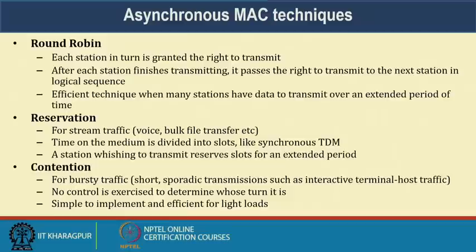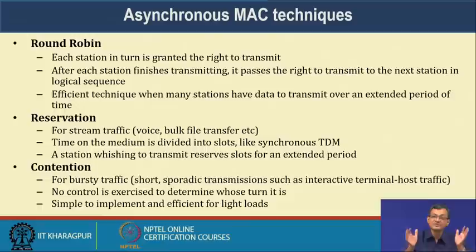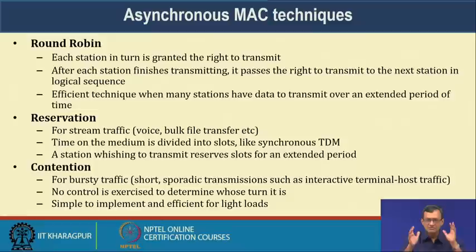In round robin for asynchronous MAC, each station is in turn granted the right to transmit. After finishing transmission, it passes the right to the next station in the logical sequence. This technique is efficient when many stations have data to transmit over an extended period. However, if some stations have nothing to transmit, they still get a turn — wasting capacity. It works best when all stations are transmitting uniformly.